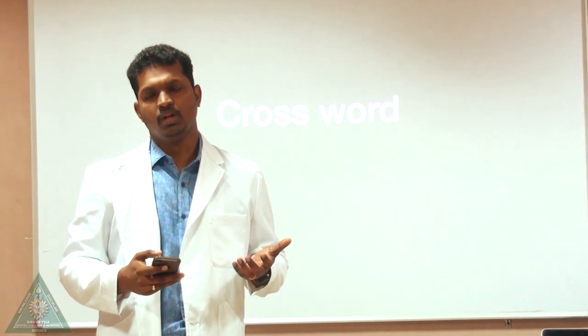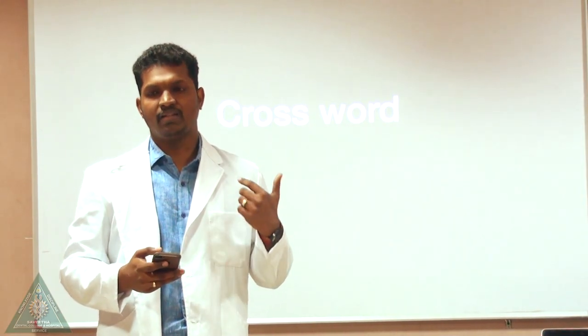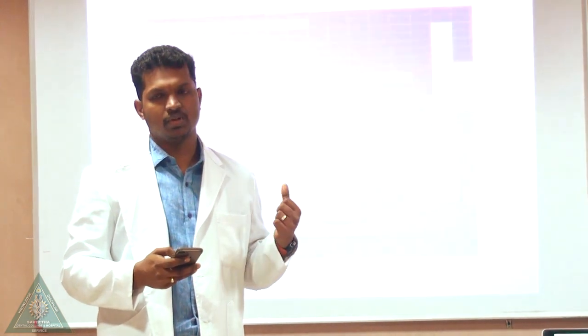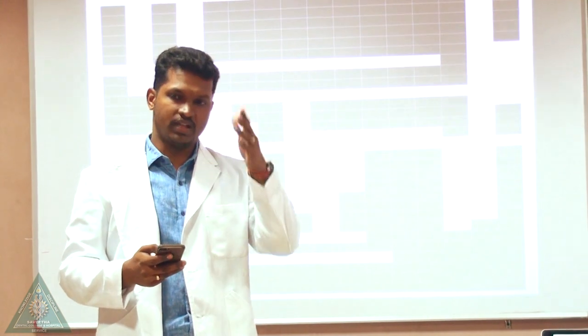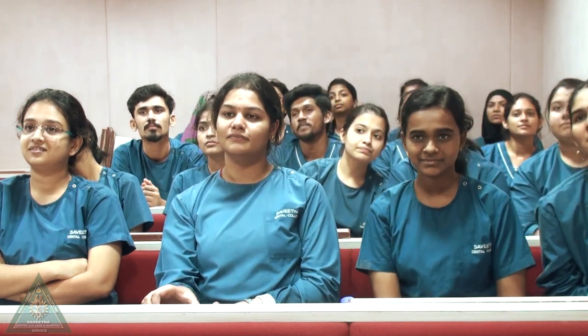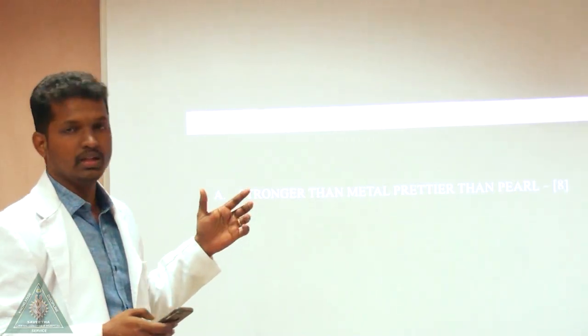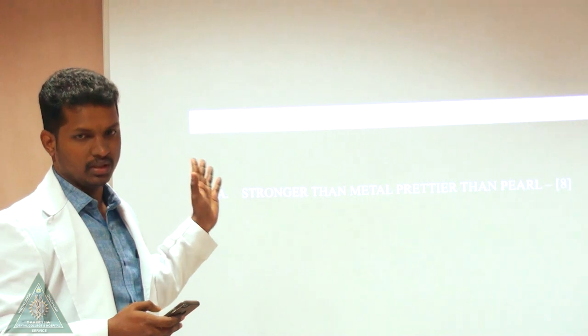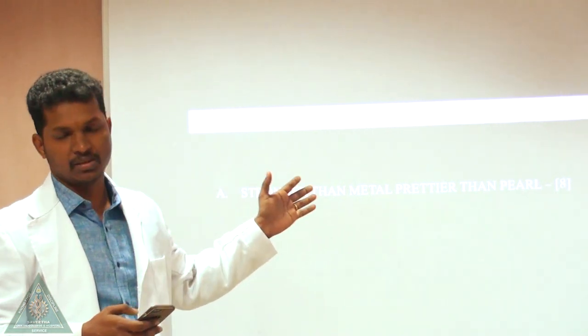Now we are going to have an activity on crossword. We are given a crossword with Across and Down clues. We will be providing clues regarding the answers, and you have to find out the answers. The first question is number A across.